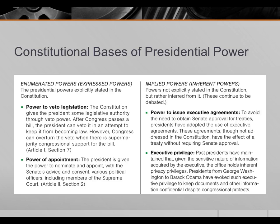One implied power is the power to issue executive agreements — a power that derives from the president's foreign policy-making powers. Presidents have, from time to time, signed agreements with foreign countries and foreign dignitaries without waiting for or even asking for Senate approval. While these agreements do not become the law of the land in the sense that courts would consider them law, as long as successive presidential administrations abide by them, they basically function as treaties. Many people feel this is quite controversial.